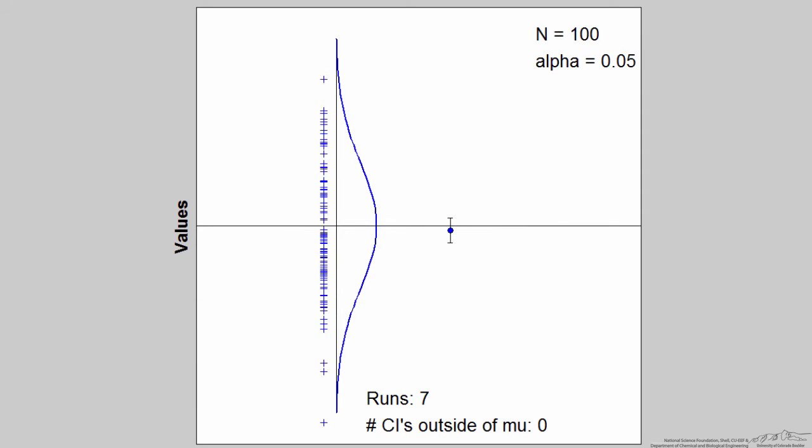As we keep running it, we again would expect 1 out of 20 to fall outside of the mean. We got 1, we'd expect 2, there's 2. Got a few more. The student number is 80. There are 100 students, and this time there were 6 confidence intervals outside of the true population mean.